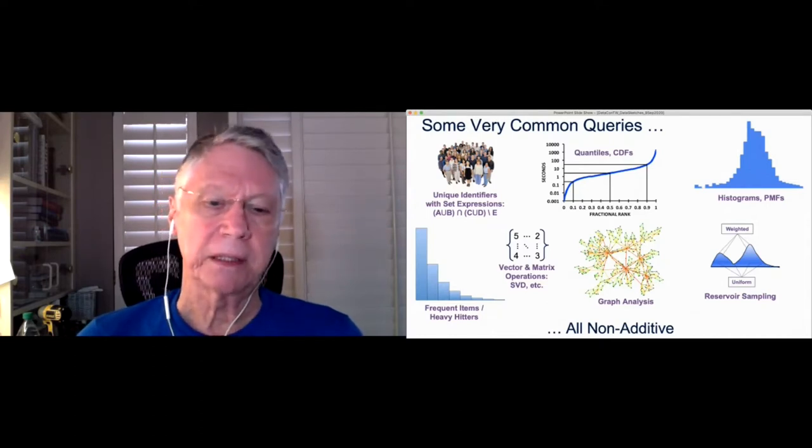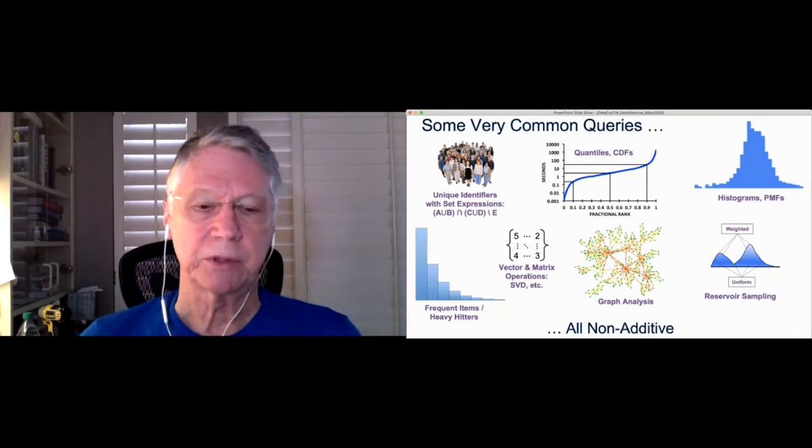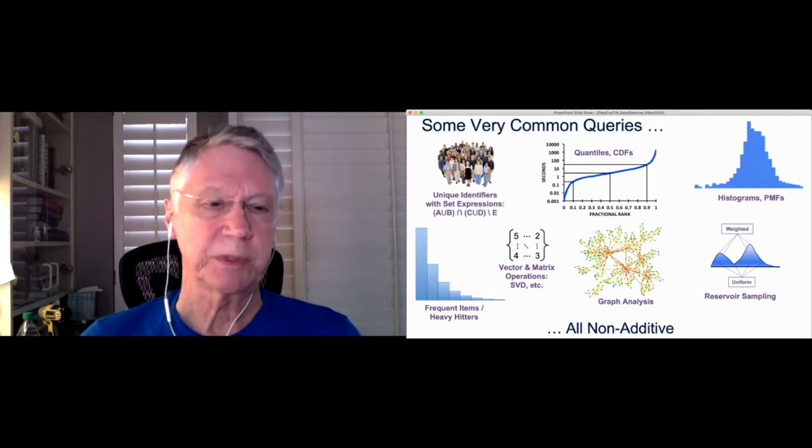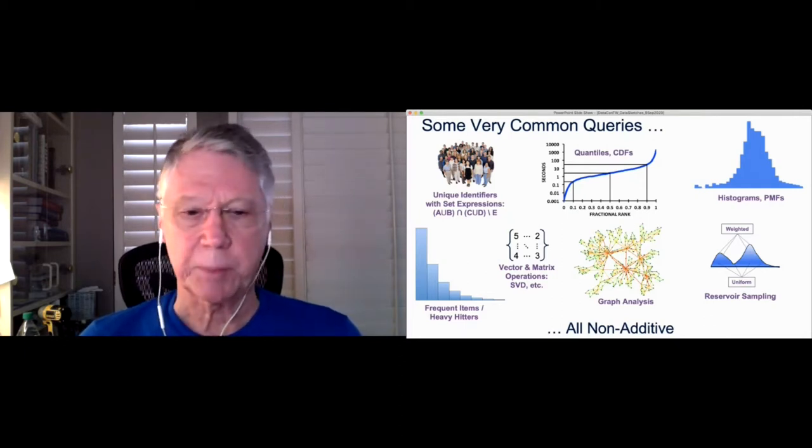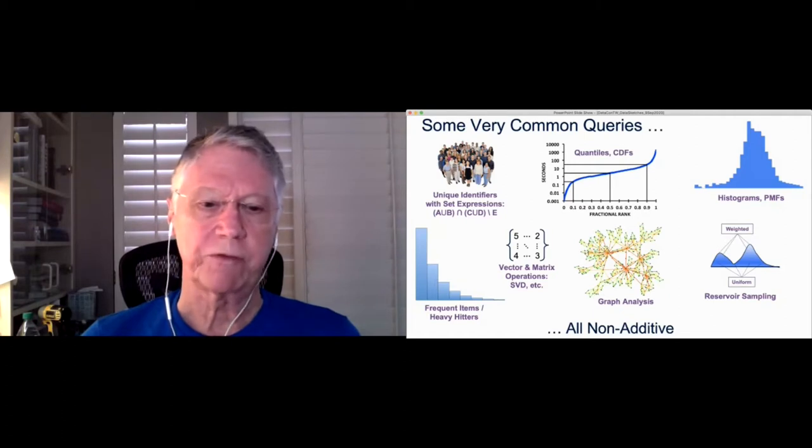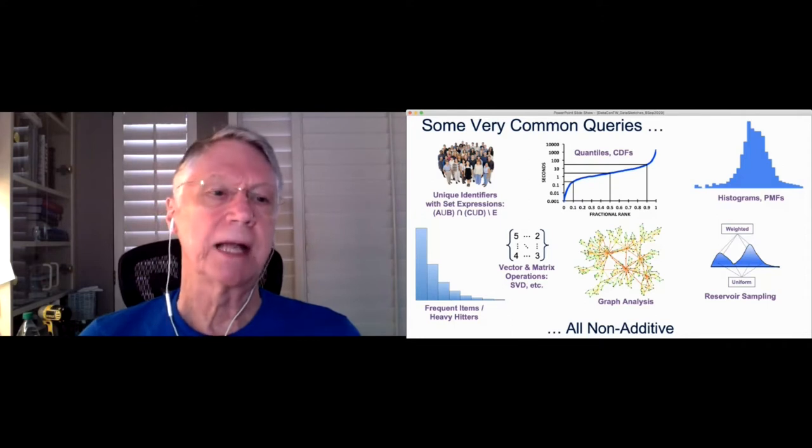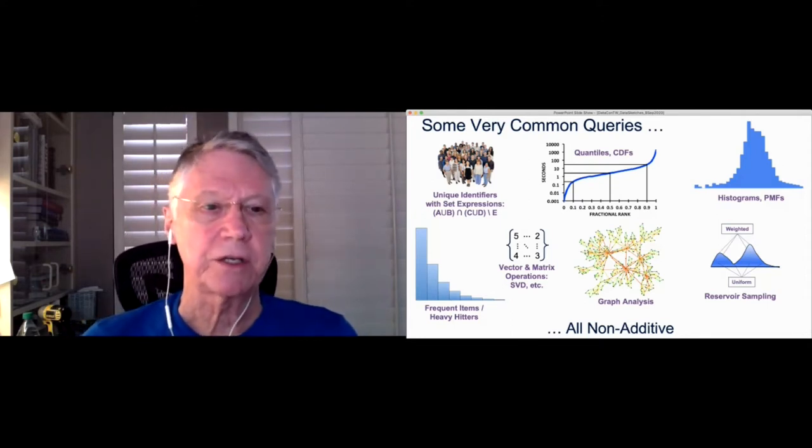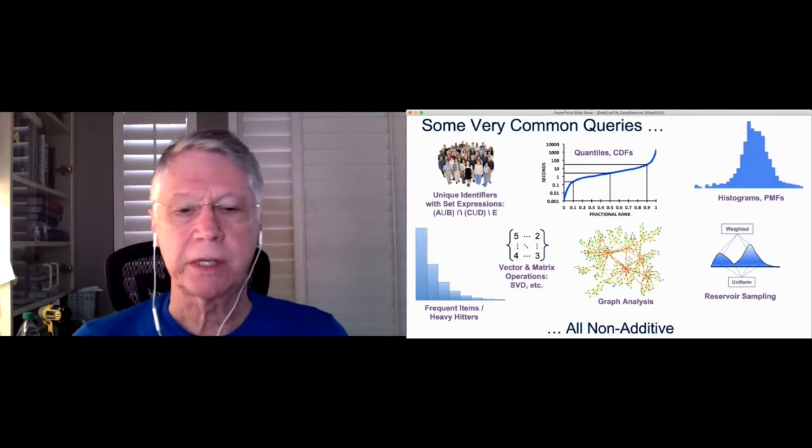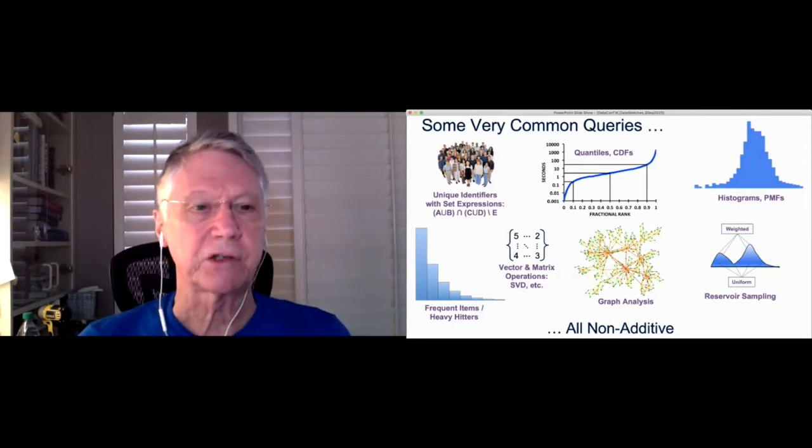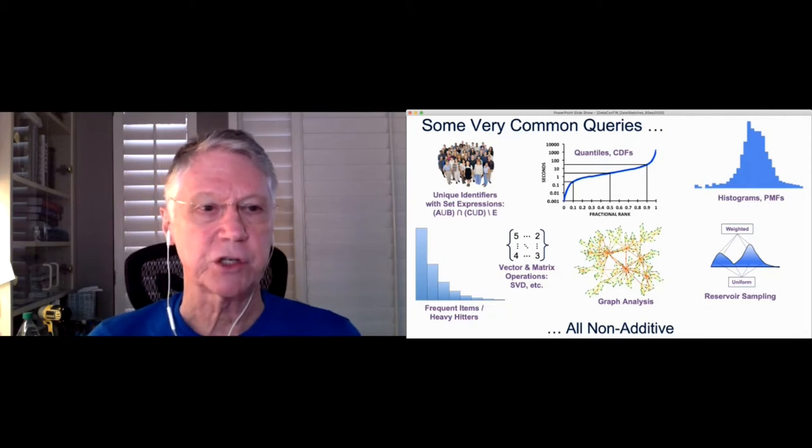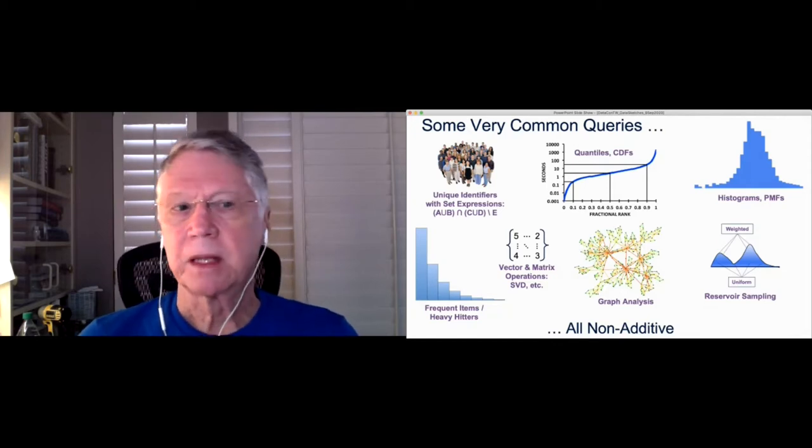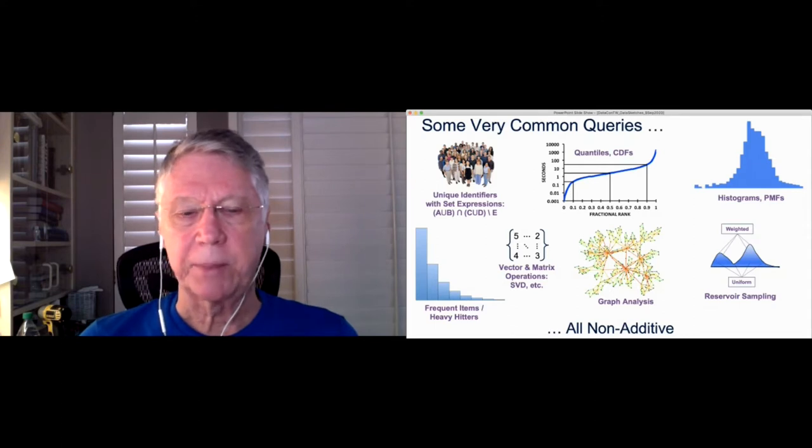But we not only would like to count just one stream, but we would like to be able to apply this to multiple different streams and do set operations on those streams. So when we view the set of unique identifiers in set A, we'd like to do a union with B or an intersection with C union D and then excluding all the identifiers from set E, for instance, and just using set expressions. So that's a very powerful capability in analysis.